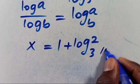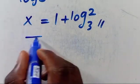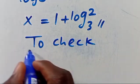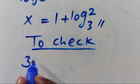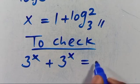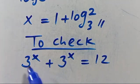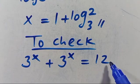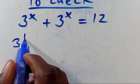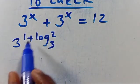This is the value of X. Now let us verify: we have 3 to the power of X plus 3 to the power of X equals 12. When X equals 1 plus log base 3 of 2, let's substitute to confirm it gives us 12.